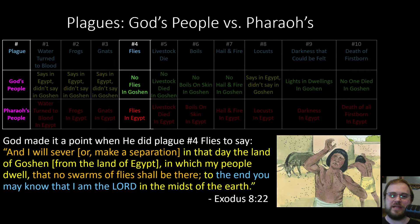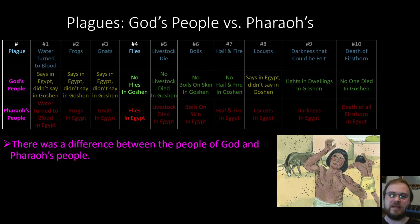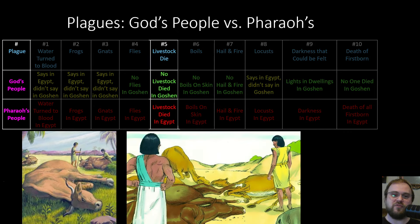God made it a point with plague number four, the flies, to say: 'I will make a separation between the land of Goshen, in which my people dwell, and the land of Egypt, that no swarms of flies may be there, to the end that you know that I am the Lord in the midst of the earth' (Exodus 8:22). There were flies in Egypt, but not in Goshen. And with plague number five, all the livestock died in Egypt, but not even one died in Goshen.